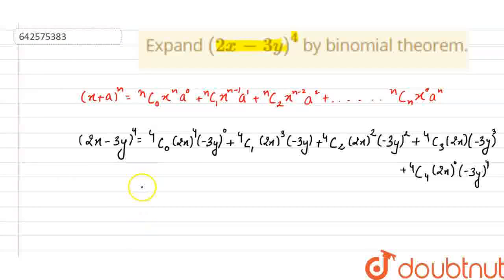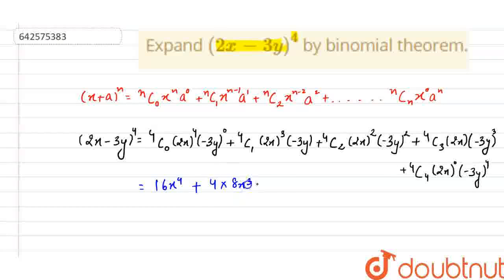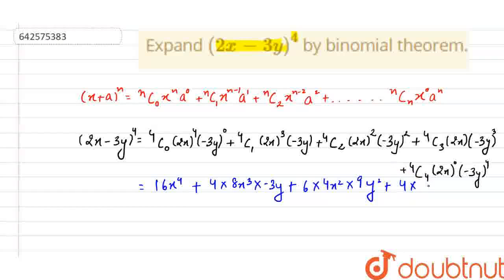Now, 4C0 equals 1 and (-3y)^0 is also 1, so we have 16x^4 plus 4 · 8x³ · (-3y) plus 4C2, which is 6, into 4x² · 9y² plus 4 · 2x · (-27y³) plus 81y^4.